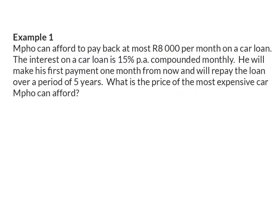Example 1. Mpo can afford to pay back at most R8000 per month on a car loan. The interest on a car loan is 15% per annum compounded monthly. He will make his first payment one month from now and will repay the loan over a period of five years.